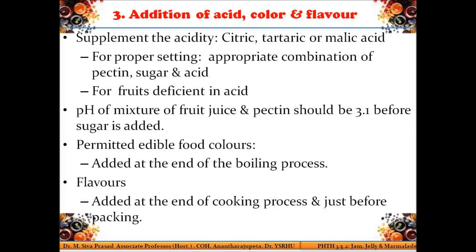Before addition of sugar, the pH of the juice and pectin should be around 3.1. At the end of the boiling process, permitted food colors and flavors can be added. Some fruits lose their flavor during boiling, and this lost flavor can be incorporated by adding permitted flavors which give a specific flavor to the jam, done just before packing or at the end of cooking.